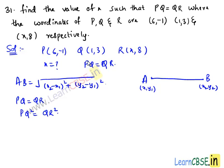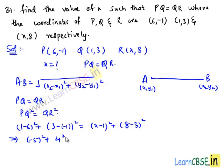PQ² is (1-6)² plus (3-(-1))² equals QR² which is (x-1)² plus (8-3)². This implies (-5)² plus 4² equals (x-1)² plus 5².